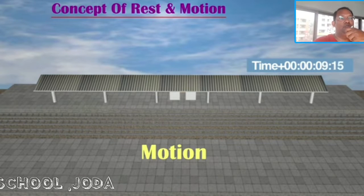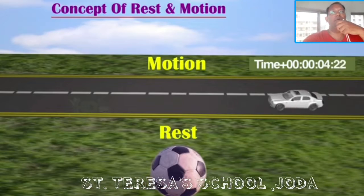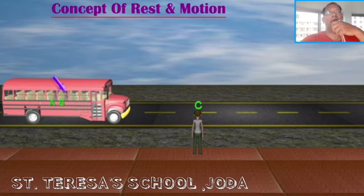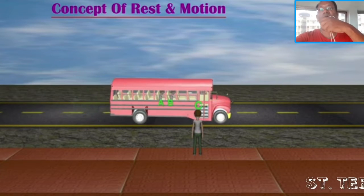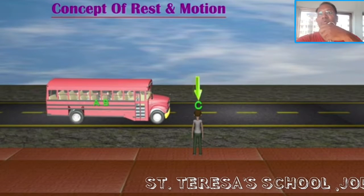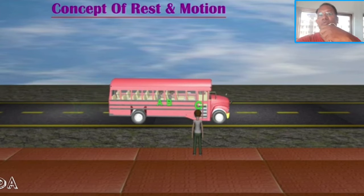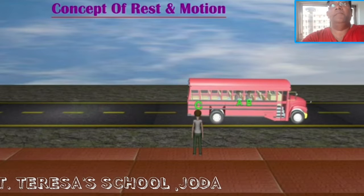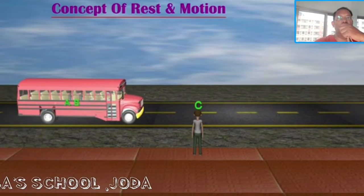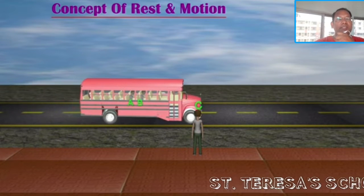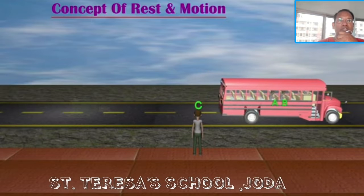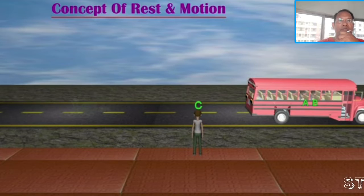Let us take an example to make this more clear. Consider two persons A and B sitting in a moving bus, and C is standing on the ground. If we ask A about B, A says B is at rest. But if we ask C about B, C says B is in motion. Related to the same person B, we get two answers — one says B is in motion, another says B is at rest. Both are correct, because with respect to A, B is at rest, but with respect to C, B is in motion. That is, rest and motion are relative — they depend on what we consider as the reference.